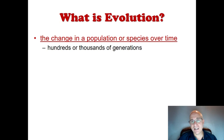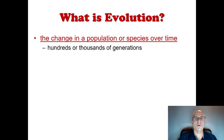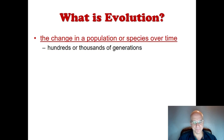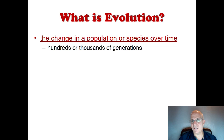What do we mean by over time? We're not going to see this happening overnight. Over time generally refers to hundreds or thousands of generations. Generations is the better term because different species have different generation times. An average human generation time is around 20 to 25 years.